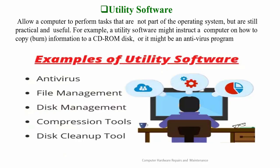Utility software allows a computer to perform tasks that are not part of the operating system but are still practical and useful. For example, utility software might instruct a computer on how to copy information to a CD drive, or it might be an antivirus. Examples of utility software include antivirus programs, file management tools, disk management, compression tools, and disk cleanup.